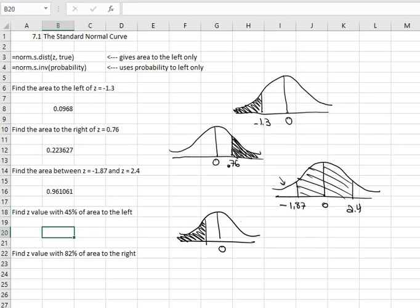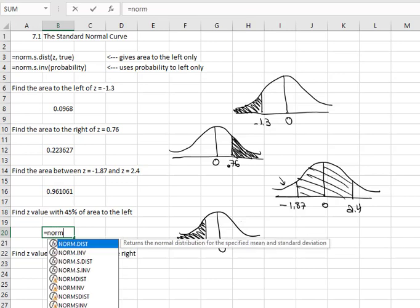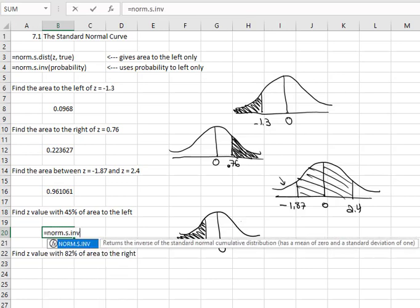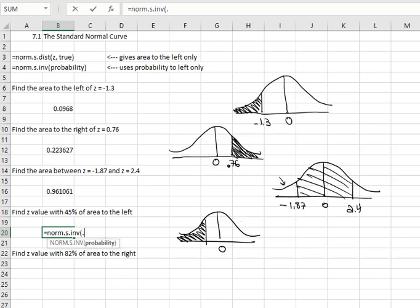Type in equals norm.s.inv for inverse, open a parentheses, because with the inverse, I already know the probability is 0.45. When I hit enter, that'll tell me that the z value is negative 0.12566. Negative, just like we expected.